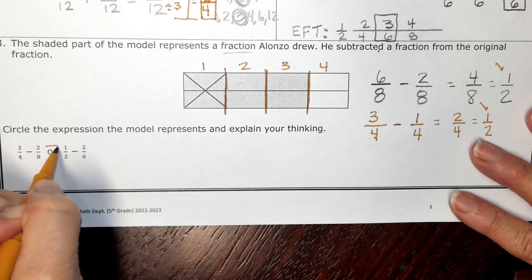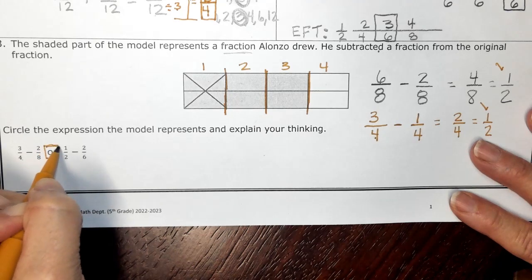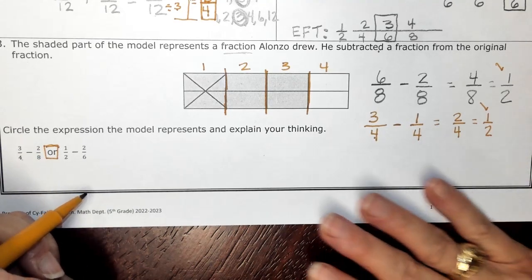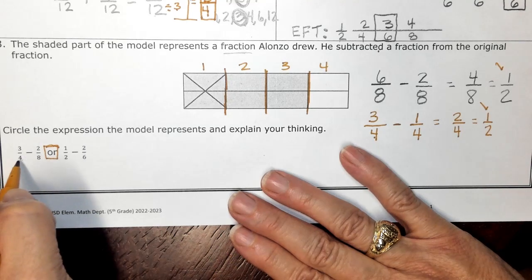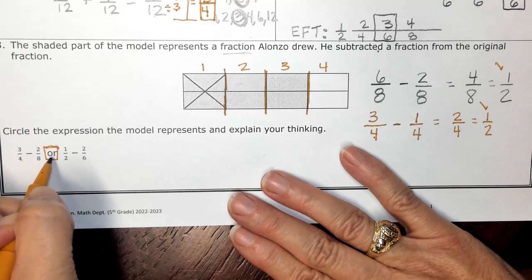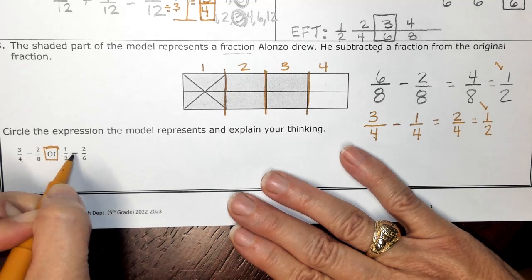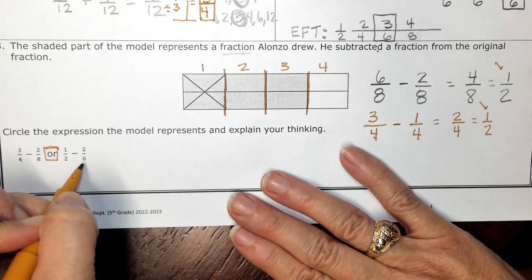So I'm going to circle this word or because it looks like I have a choice. I can either say that this is three fourths minus two eighths or I can say one half minus two sixths.